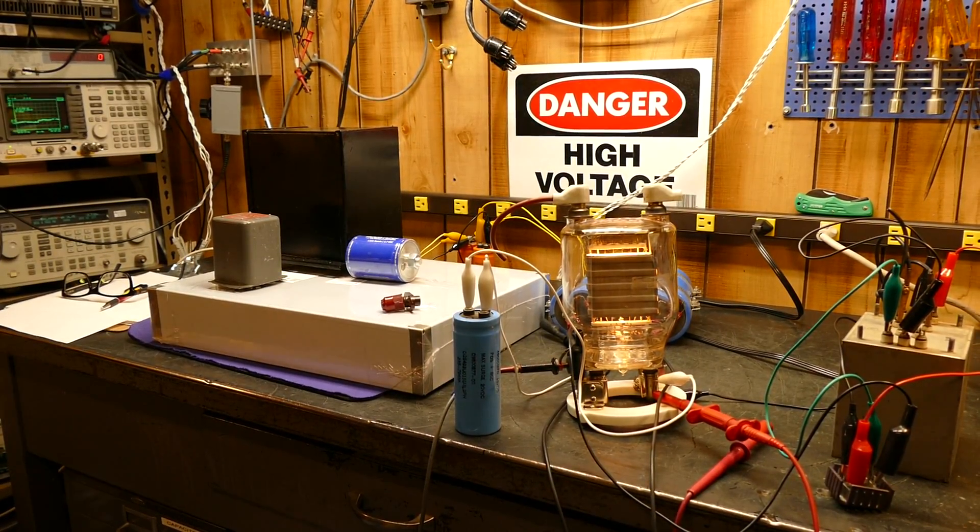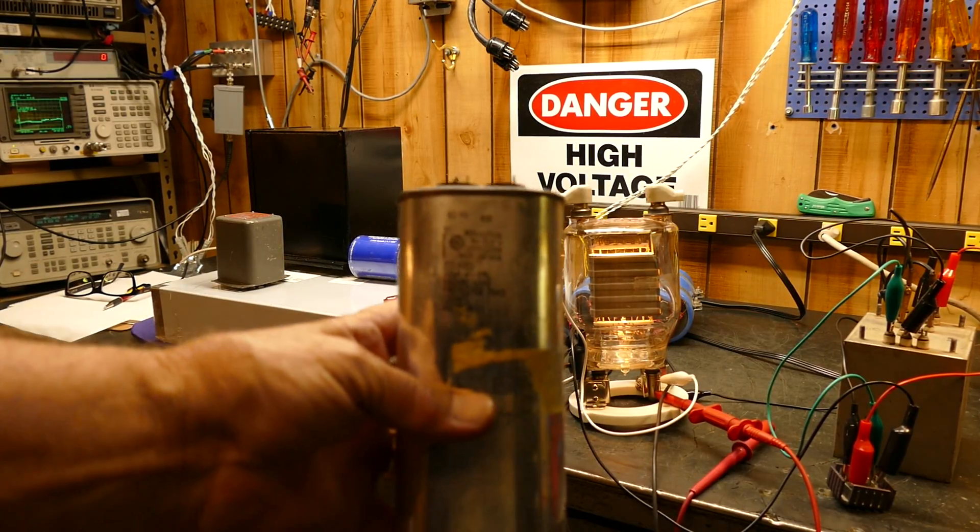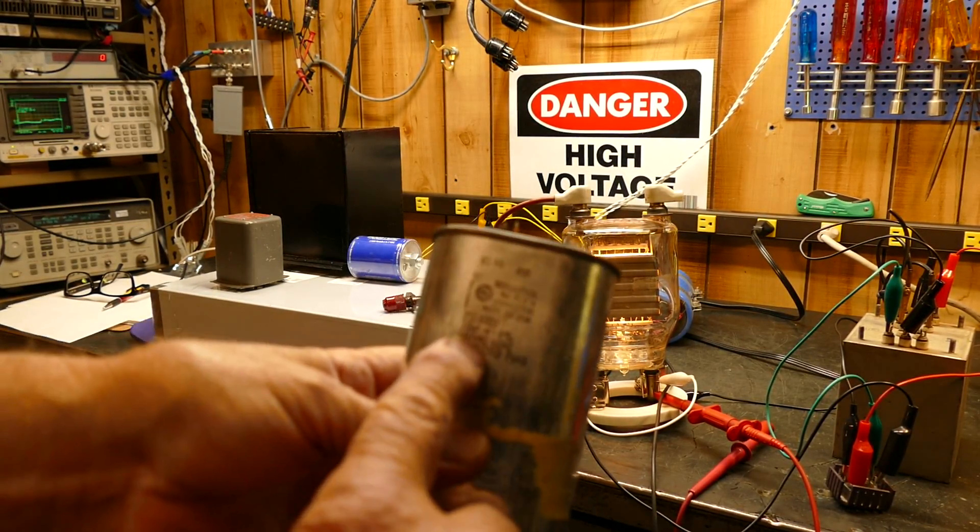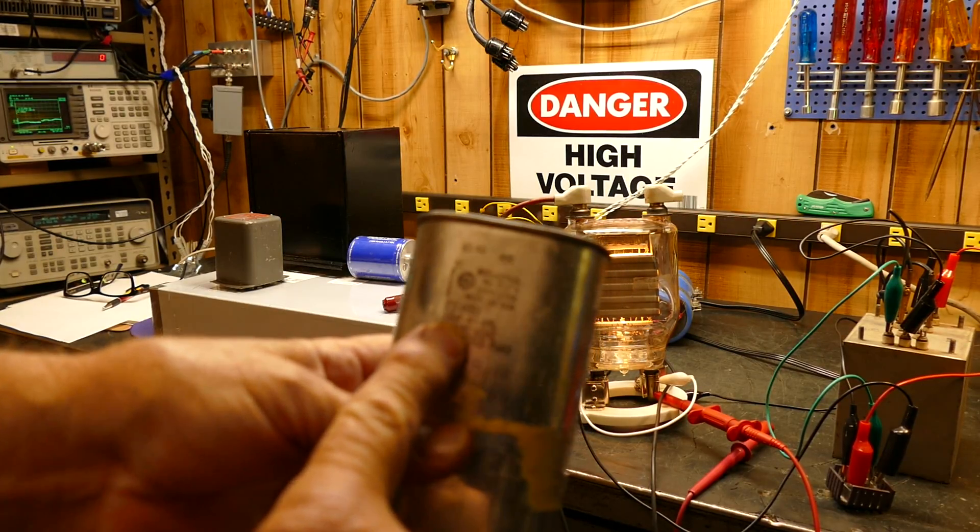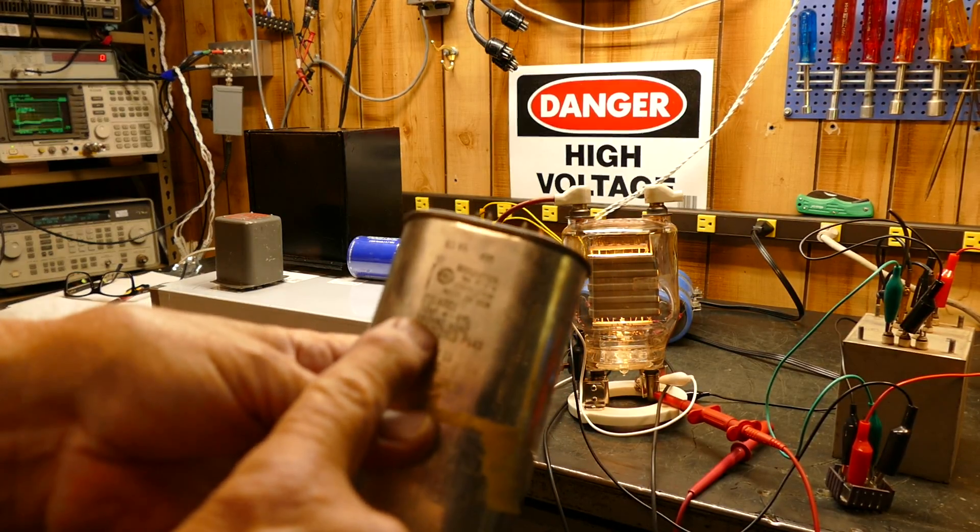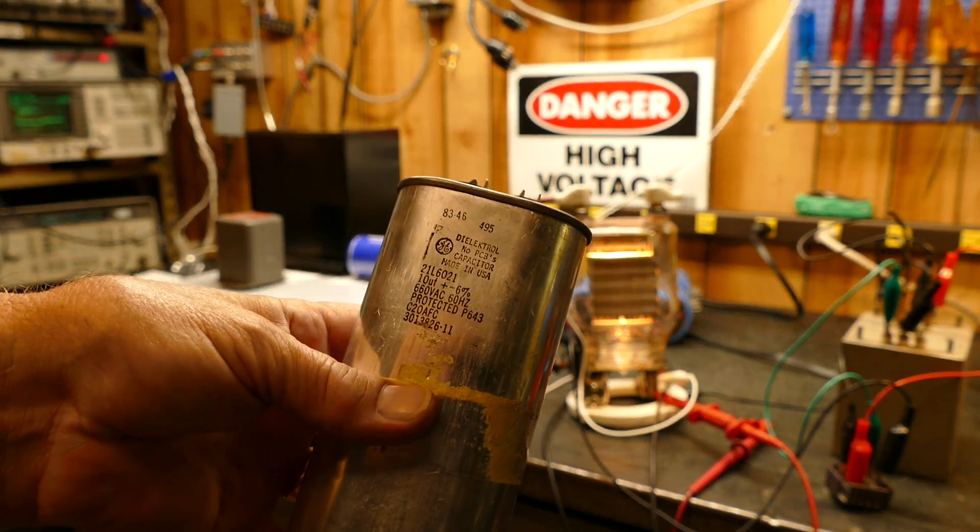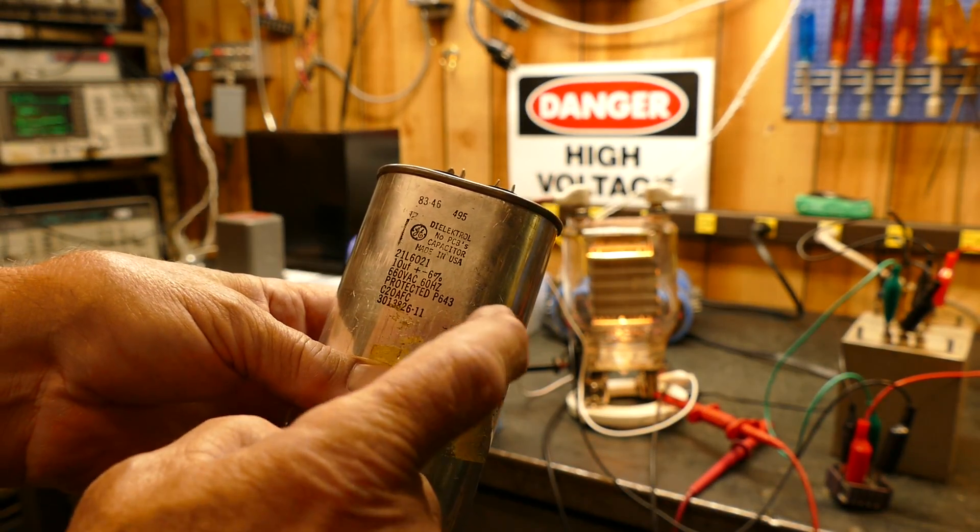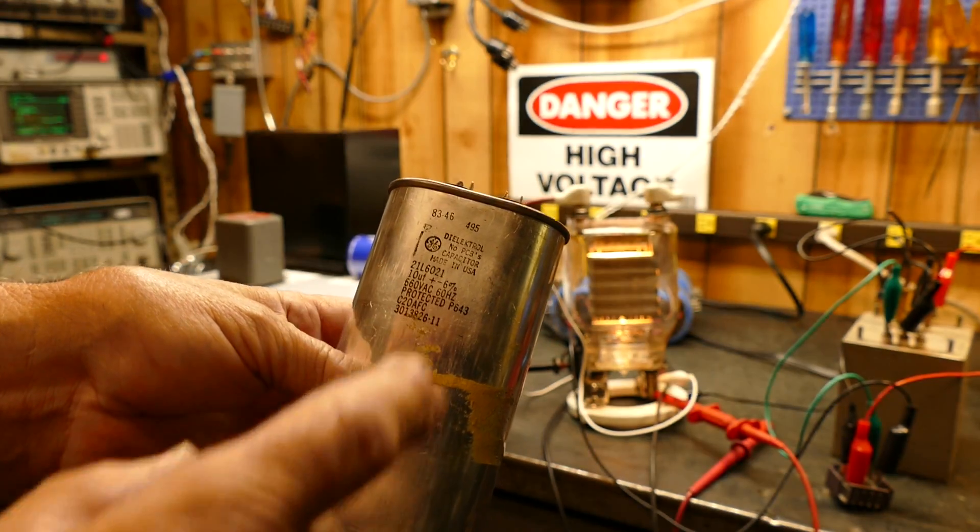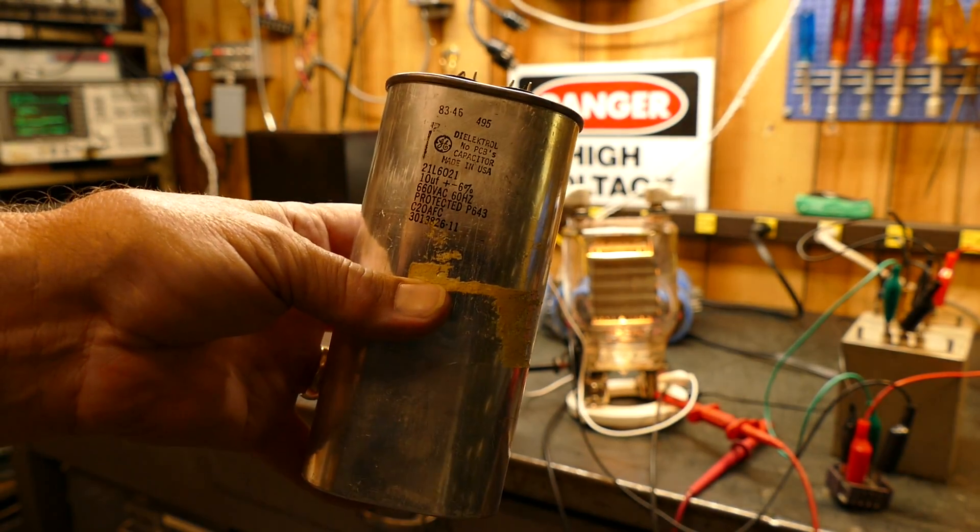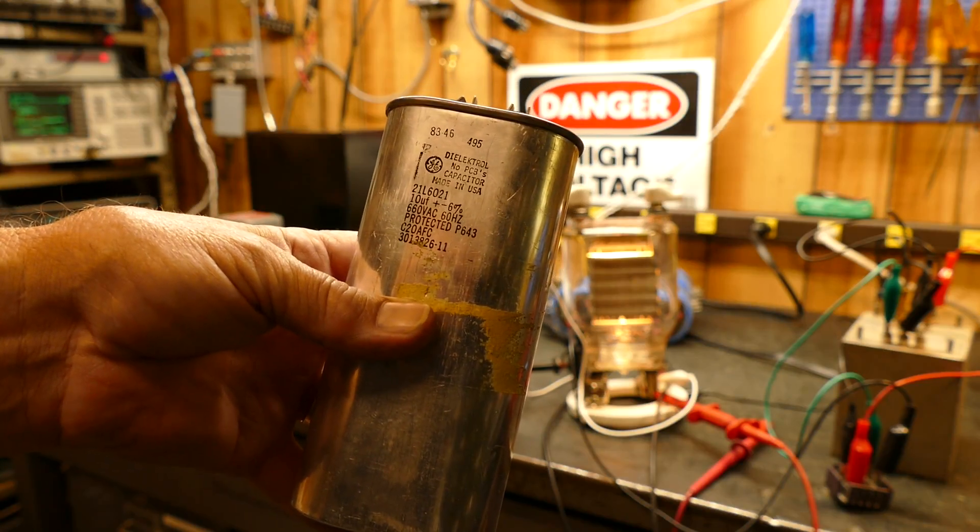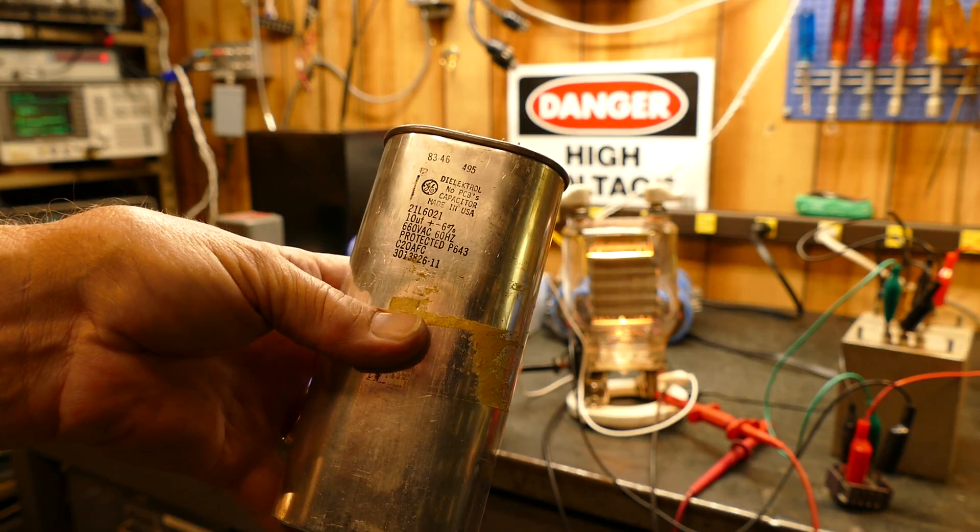I'm not going to be using this capacitor, but I dug this thing out. If you look at it, this thing is 10 microfarads at 660 volts AC. Well, an AC capacitor has to see the peak to peak voltage across the circuit.